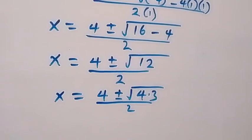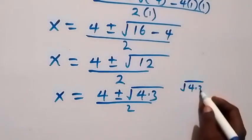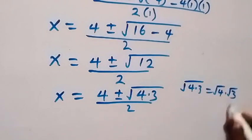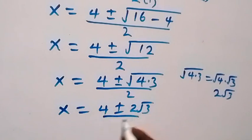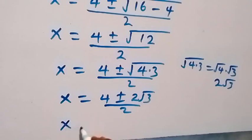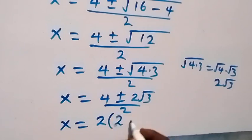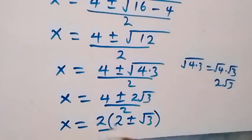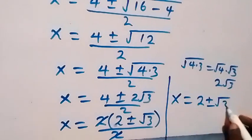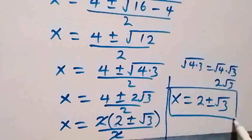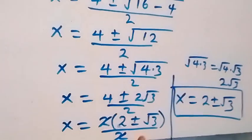We can write root 12 as root 4 times 3, which separates as root 4 times root 3, which equals 2 root 3. So x equals 4 plus or minus 2 root 3, over 2. We factor out 2 to get x equals 2 times bracket 2 plus or minus root 3, close bracket, over 2. The 2s cancel, giving us x equals 2 plus or minus root 3 as our solutions.